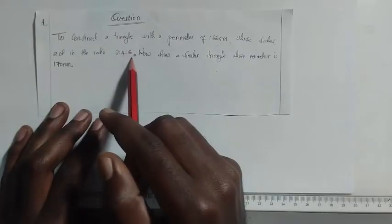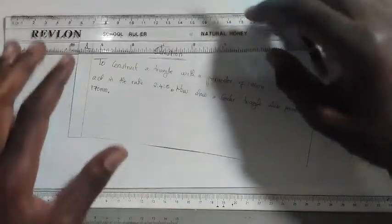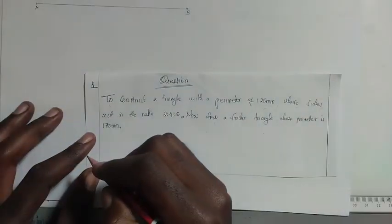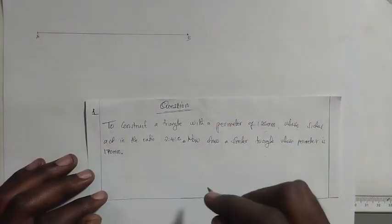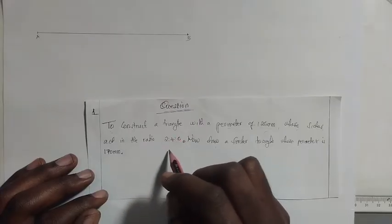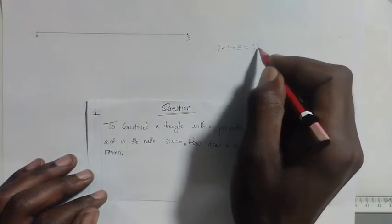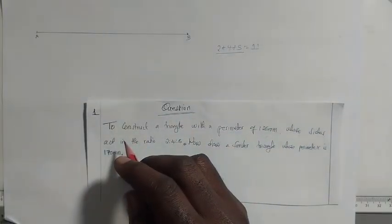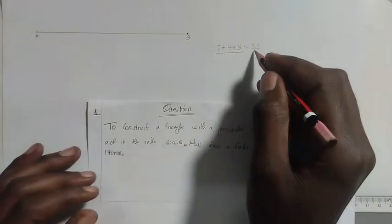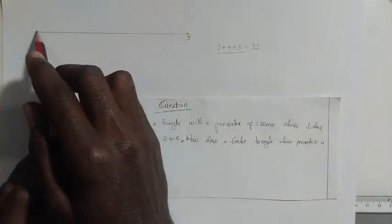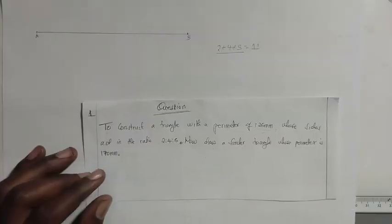Let's start with section one. Measure a line AB of the given perimeter, 125 millimeters. Now, the sum of the given ratio is 2 plus 4 plus 5, which equals 11. So we are going to divide this line AB into 11 equal parts.